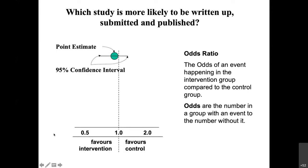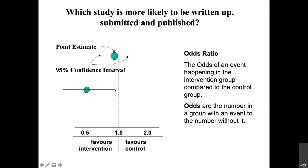We are talking about an outcome that is bad — for example, death, poor quality of life, or some kind of morbidity. If the outcome is positive, for example becoming pregnant, the direction could be opposite to what I described. For an outcome that is negative like death, a value less than one of odds ratio will represent a benefit in favor of intervention. If the confidence interval does not cross the value one, we are certain this study shows the intervention is effective beyond the play of chance.